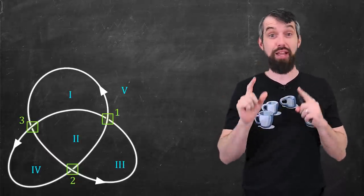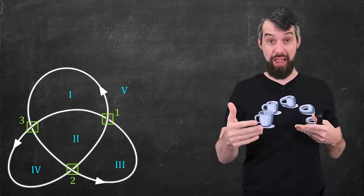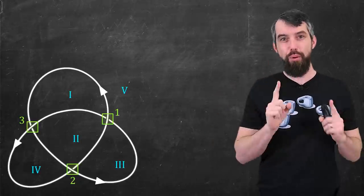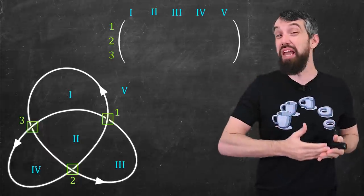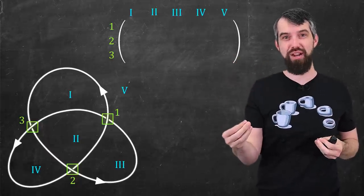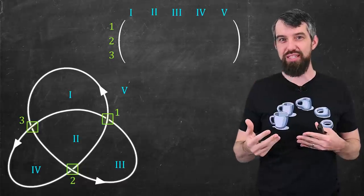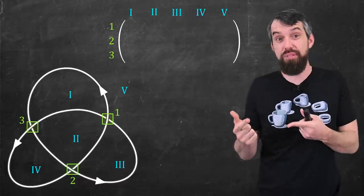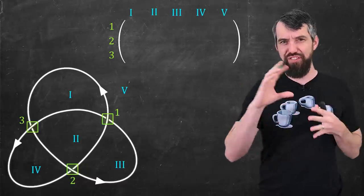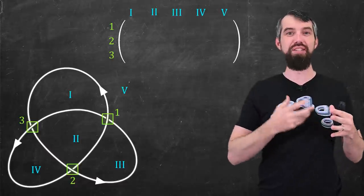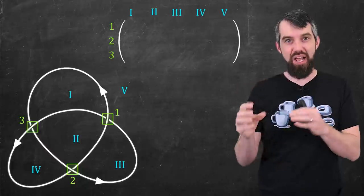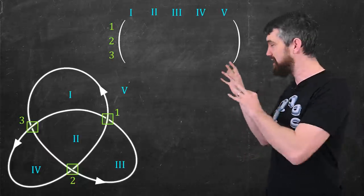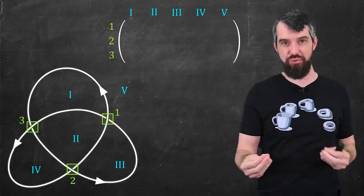So I've labeled my crossings, I've labeled my regions, and I'm just going to keep track of them with those labels. Now what I want to do is I want to construct a matrix. This is going to be a 3 by 5 matrix where I sort of think about the rows as being the crossings and the columns being the regions. So the feeling I want you to get is that I'm trying to come up with something very algorithmic, something that really encodes the data of this particular knot into this mathematical structure of a matrix.